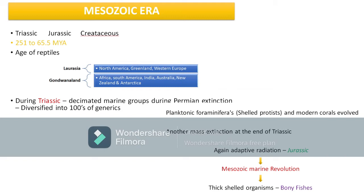During the Triassic period, marine groups that were decimated in the Permian extinction diversified into hundreds of genera. During the Permian period of the Paleozoic era, 96% of species went extinct. Those extinct species then diversified and became hundreds of genera in the Triassic. Planktonic foraminiferans — shell-bearing protist organisms — and modern corals also evolved during this Triassic period.